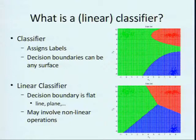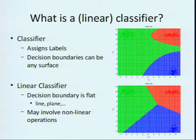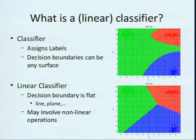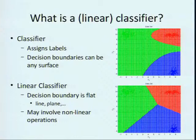The first graph shows a 2D input space with colors as class labels. The line between the colors that divides the input space is called the decision boundary. In general, the boundary can have any shape — like in this picture, it's a quadratic shape. A linear classifier is defined as a function that divides the input space with flat lines or planes, like in the second graph. However, the operations involved in a linear classifier are not all linear — only the decision boundaries are linear.